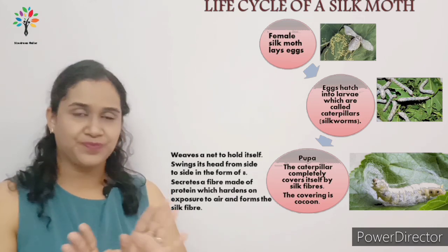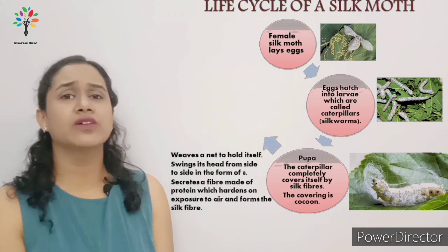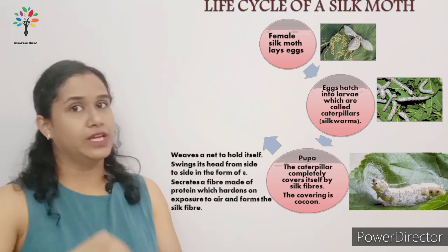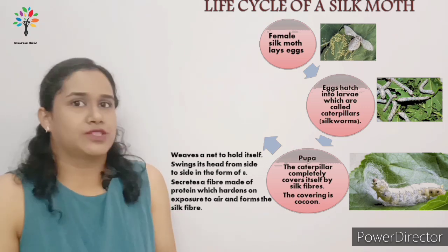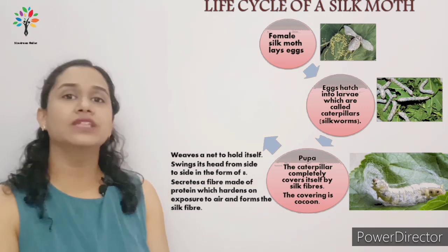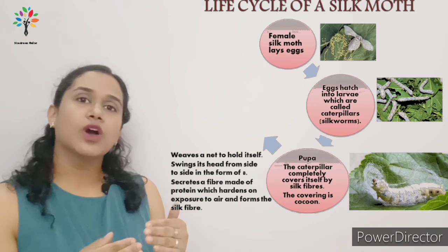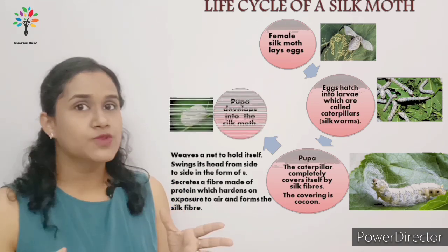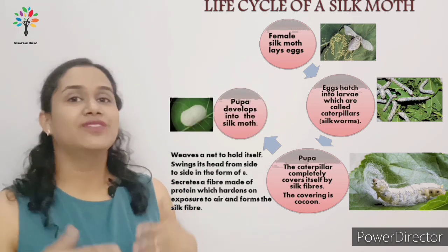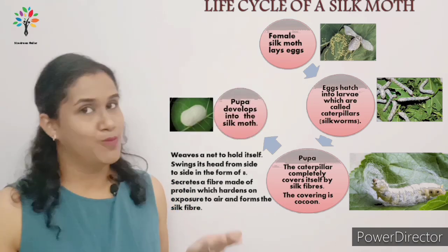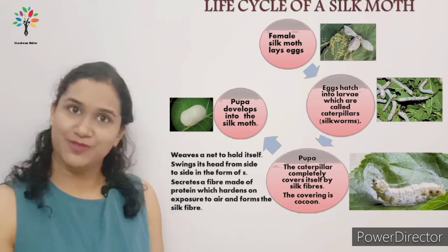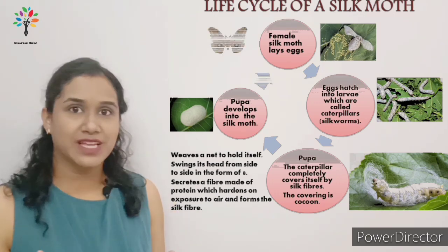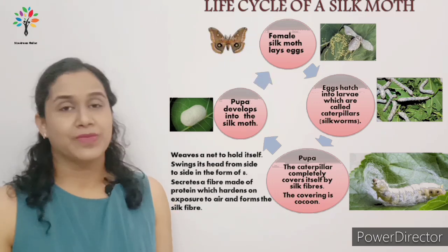The pupa is the stage where the caterpillar covers itself with the silk fiber, and the cocoon is the covering. Once the cocoon is formed, it doesn't move and the caterpillar transforms to become the silk moth. This completes the life cycle.